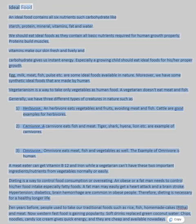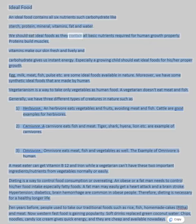An ideal food contains all six nutrients: carbohydrates like starch, protein, minerals, vitamins, fat, and water. We should eat ideal foods as they contain all basic nutrients required for human growth. Proteins build muscles, vitamins make our skin fresh and lively.